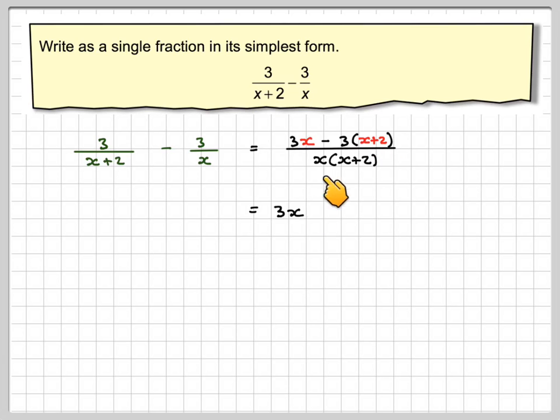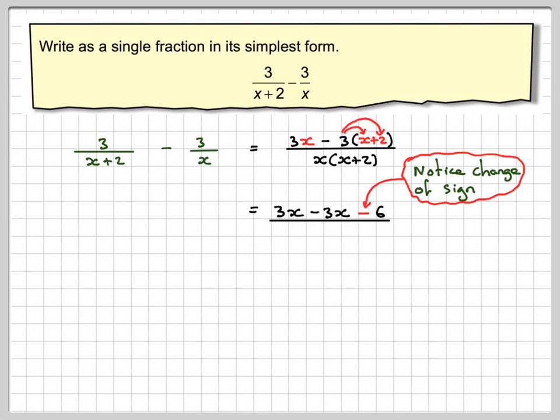So we're going to have 3x minus 3 times x which is 3x, 3 times 2 minus 3 times 2 which is minus 6. Notice the change in sign all over x times x plus 2.